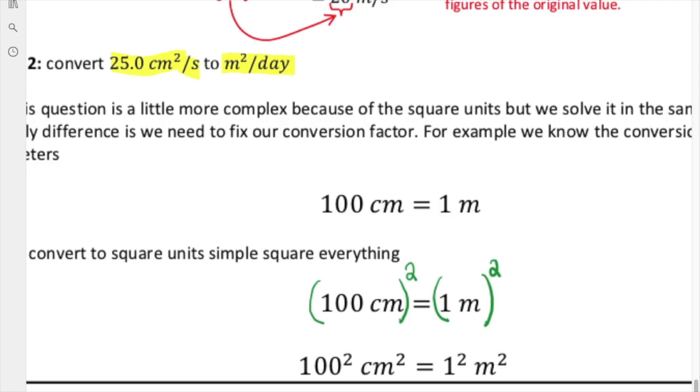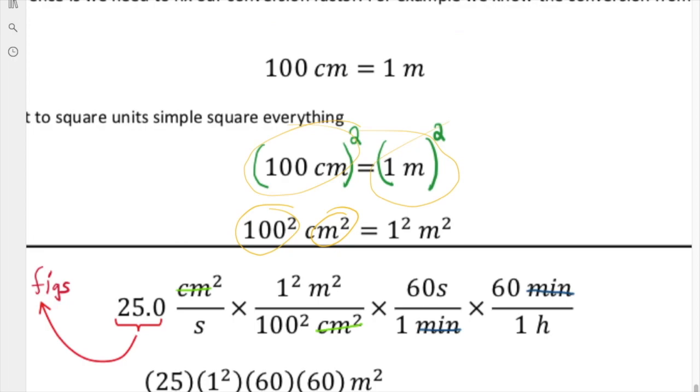We know that 100 centimeters is equal to 1 meter, but we need those units to be squared, so we literally just square everything. So we've got 100 squared centimeters squared times 1 squared meters squared.